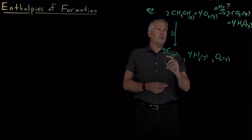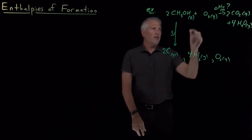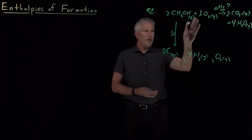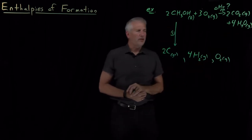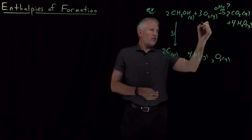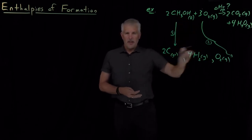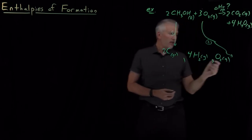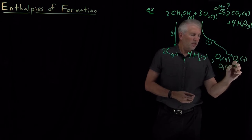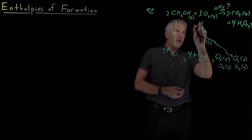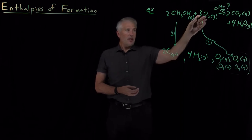Once I've got these elements in their standard states — actually, I misbalanced the reaction earlier. Accounting for the two oxygens in methanol, I only need three O2s in the balanced reaction. Two oxygens plus six oxygens from three O2s adds up to eight, matching four waters. Now it's balanced correctly. Reaction number two: breaking down the O2s into elements in their standard state. But O2 is already a pure element in its standard state, so I write three O2s as three O2s — reaction two doesn't actually do anything.